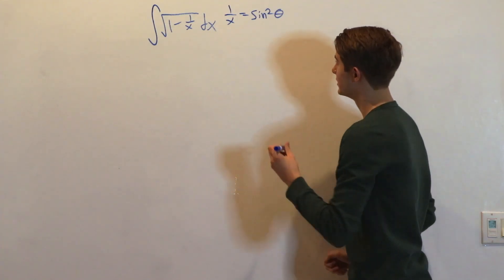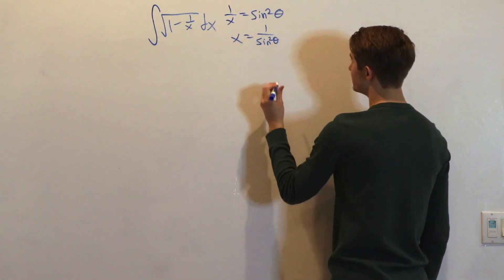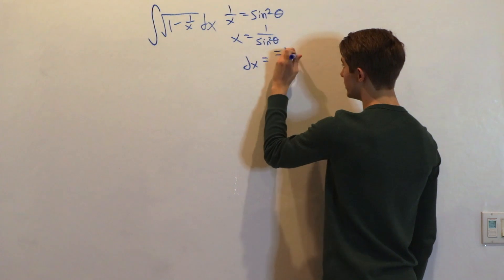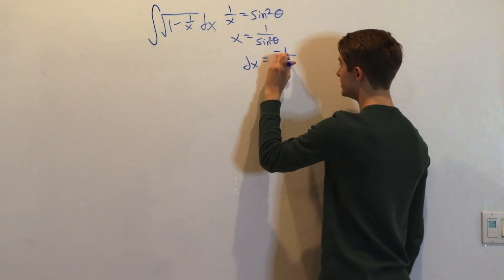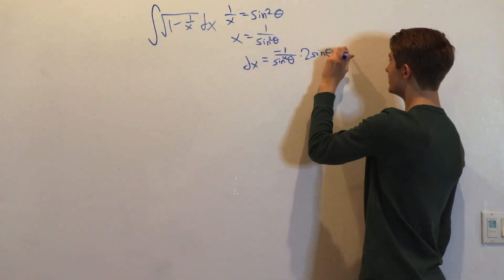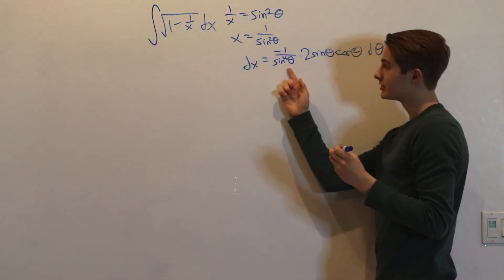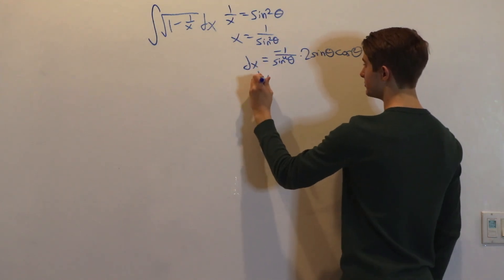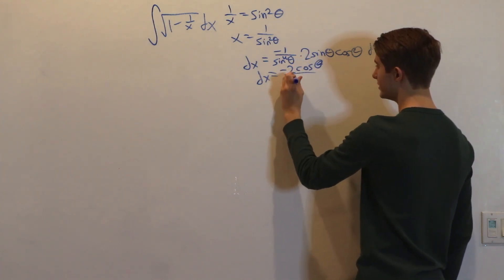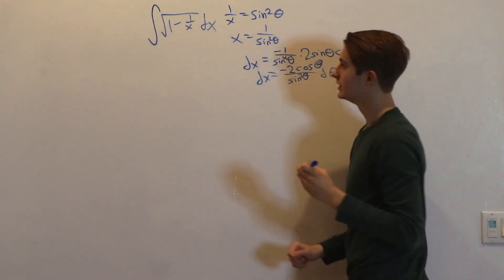Now let's find dx. We know x equals 1 over sine squared theta, so when we differentiate, we get dx equals, doing the derivative of 1 over something, negative 1 over sine squared squared — which is sine to the fourth — times the derivative of the bottom, which is 2 sine theta cosine theta dθ. We have sine to the fourth on the bottom and sine to the first on top, so we simplify: dx equals negative 2 cosine theta over sine cubed theta dθ.